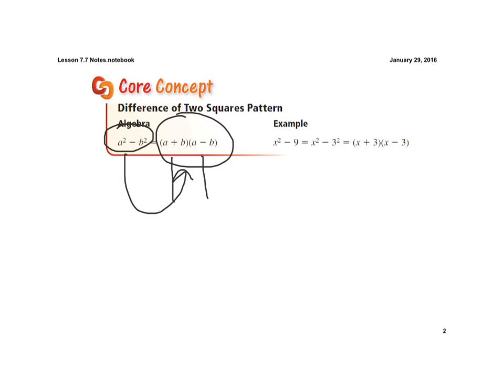So in this example, it has x squared minus 9, and so we have to notice that the x squared is a perfect square, and the 9 is a perfect square. So they rewrite it as x squared minus 3 squared, and now we know that it has to be x plus 3 times x minus 3.